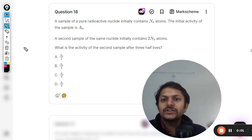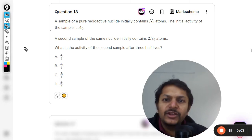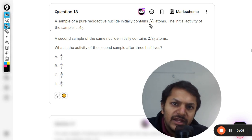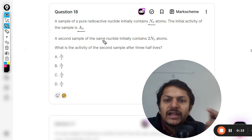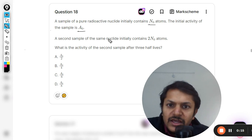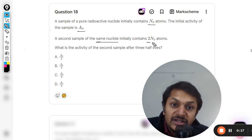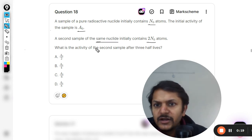Dear students, let us see what is in this question. A sample of a pure radioactive nuclide initially contains N₀ atoms. The initial activity of the sample is A₀. The second sample of the same nuclide, so it has the same half-life, initially contains twice the number of atoms.